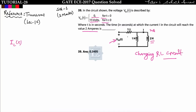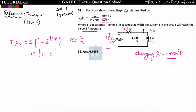In a charging RL circuit, i_L(t) equals I_0 into (1 minus e to the power minus t upon tau), where tau equals L upon R. Here L is the parallel combination of the inductors, which equals 2/3, and R equals 1, so the time constant is 2/3. The maximum current flows when the network reaches steady state: inductors are shorted, so I_0 equals 15 by 1 equals 15.